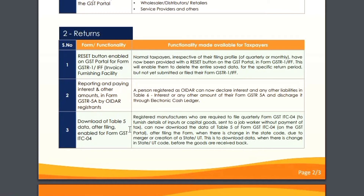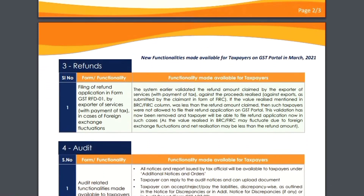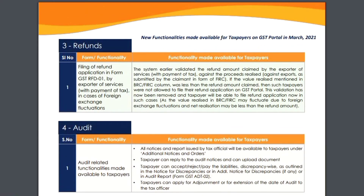Moving ahead, regarding refunds and audit from April 2021: number one says that filing of a refund application in the form of GST RFD-01 by an exporter of services — the system previously validated the refund amount claimed by the exporter against the proceeds realized or realized amount, and would show it against the BRC or FIRC column.